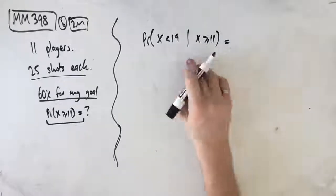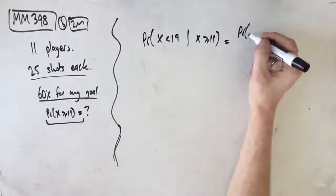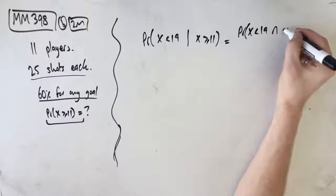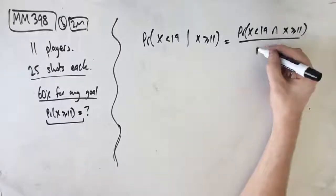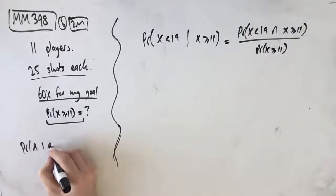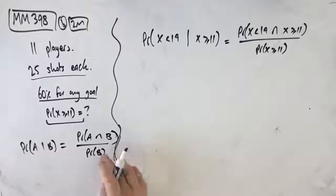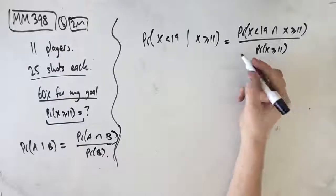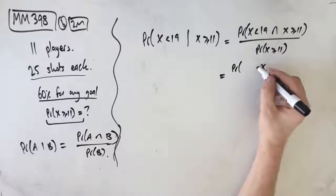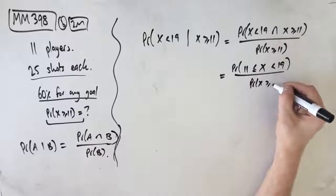If you're not sure how I got that, drop a question in the comments. Our conditional probability formula gives us: P(X < 19 | X ≥ 11) = P(X < 19 ∩ X ≥ 11) / P(X ≥ 11). The formula is P(A|B) = P(A∩B) / P(B). The intersect here becomes P(11 ≤ X < 19) over P(X ≥ 11).